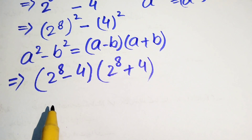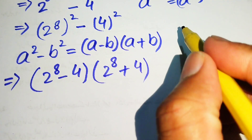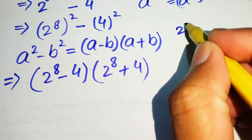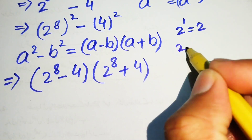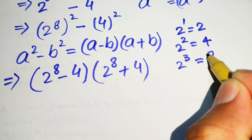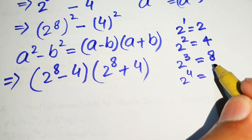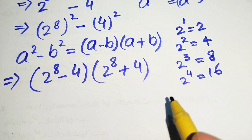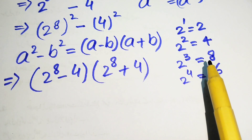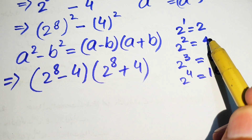Here we find the value of 2 to the power of 8. I'll show you a simple trick. 2 to the power of 1 equals 2, power 2 equals 4, power 3 equals 8, power 4 equals 16. Just focus on the right-hand side — each number is a multiple of 2. To get the next number, multiply by 2: 2, then 4, then 8, then 16, and so on.